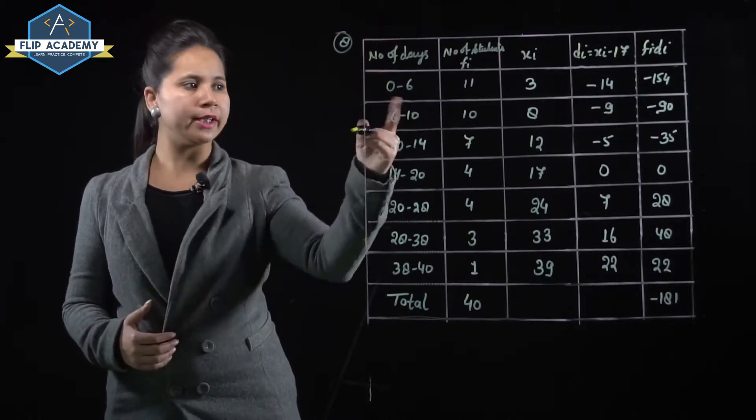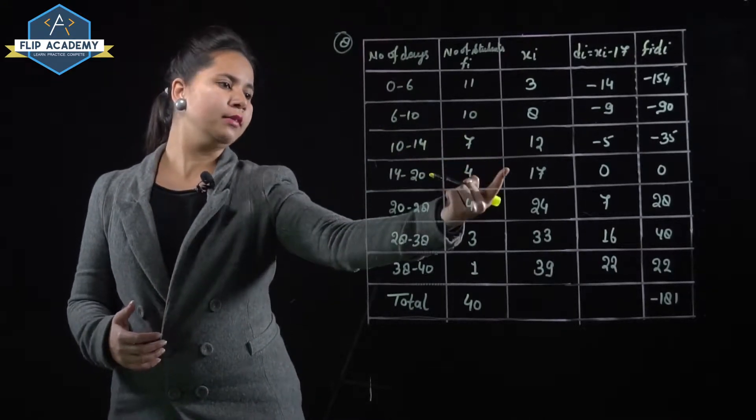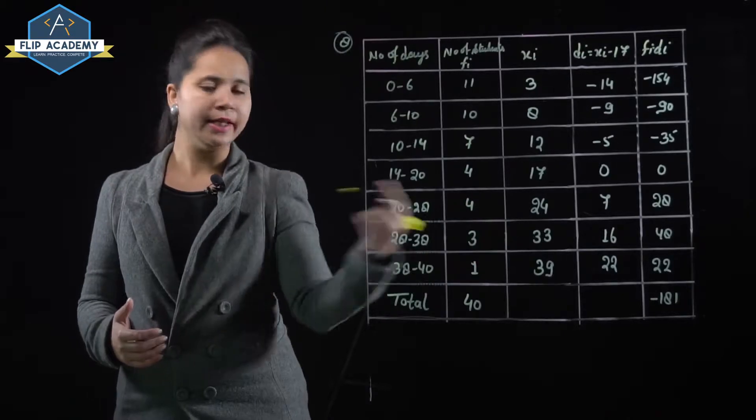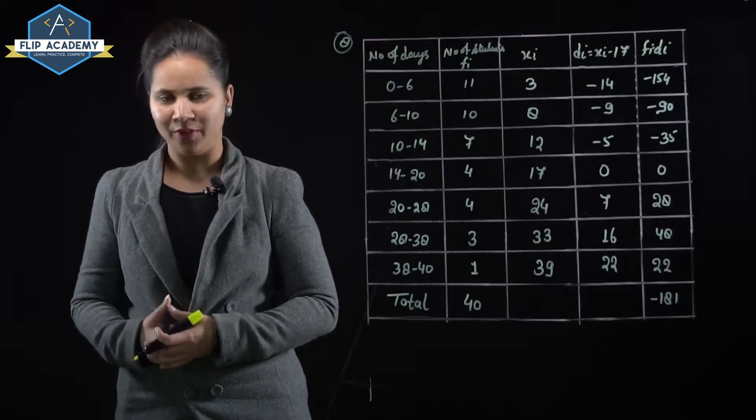0 plus 6 upon 2 equals 3. Same as 6 plus 10 upon 2 equals 8, then 12, 17, 24, 33, and 39. This way we have found the class marks, also known as mid values.